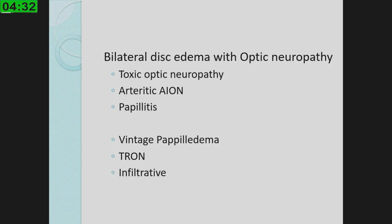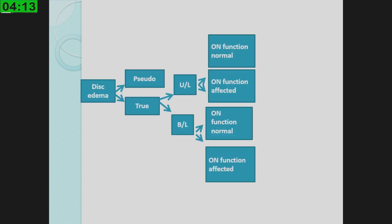Those were cases of bilateral disc edema with normal optic nerve function. For bilateral disc edema with sudden-onset defective vision, think of toxic optic neuropathy or methanol poisoning — you'll get the relevant history — and think of arthritic AION and papillitis. For chronic loss of vision with bilateral disc edema, think of vintage chronic papilledema, thyroid optic neuropathy, and infiltrative causes.